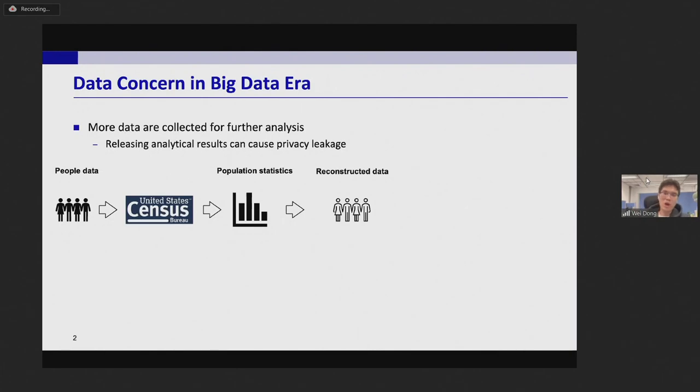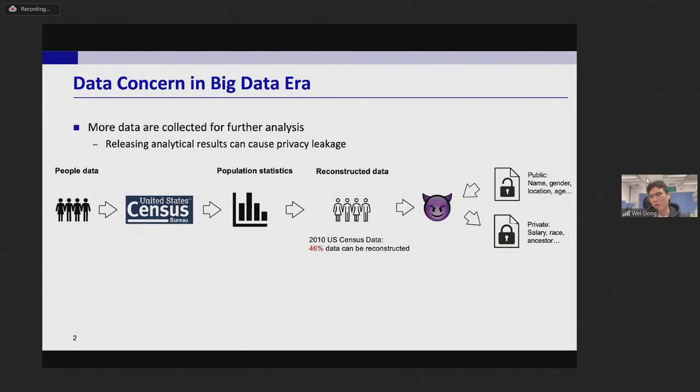However, we can reconstruct the original data based on these statistics by solving a set of equations. For example, we can reconstruct 46% of U.S. Census data in 2010. This data is still anonymous, but they can further be identified with some public confirmation.